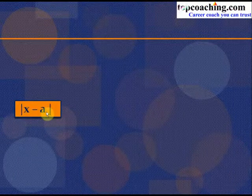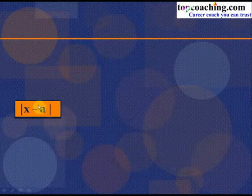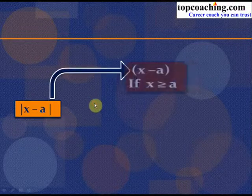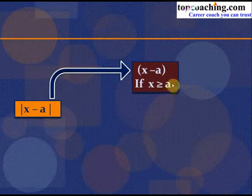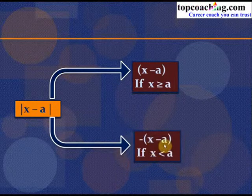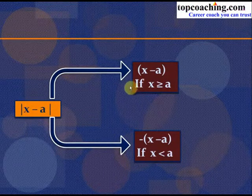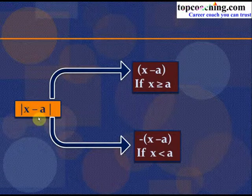Modulus of (x − a) is defined as: (x − a) when x ≥ a, and −(x − a) when x < a. When x ≥ a, the quantity inside the modulus sign is positive, so |x − a| equals x − a directly.